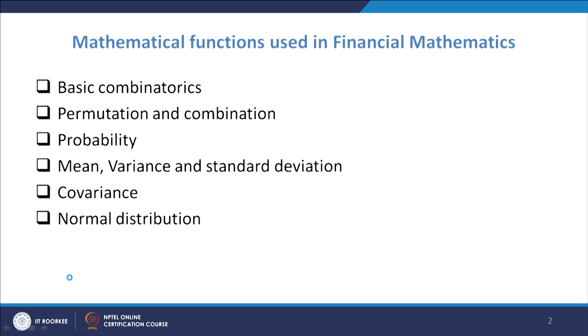Then we will try to have the idea about covariance. We calculate covariance depending upon certain expressions, and then from there we find the correlation. Correlation basically talks about how two random variables behave — if one is increasing, whether the second is also increasing, or if one is decreasing, how the second is behaving. Depending upon this correlation coefficient, you can predict how these two are behaving.